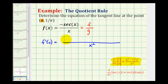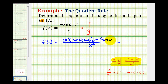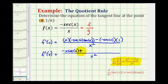So we'll have our denominator times the derivative of the numerator. The derivative of secant x is equal to secant x tangent x. Since we have negative secant x, we'll have negative secant x tangent x. Minus f times g prime, or the numerator, negative secant x times the derivative of the denominator, which would just be one. Now let's see if this simplifies. Here we'll have negative x secant x tangent x, plus secant x.